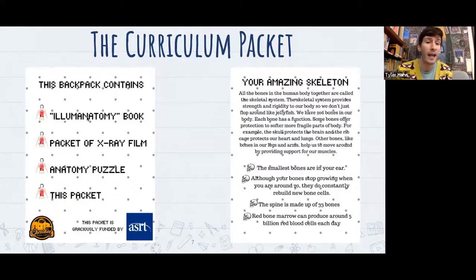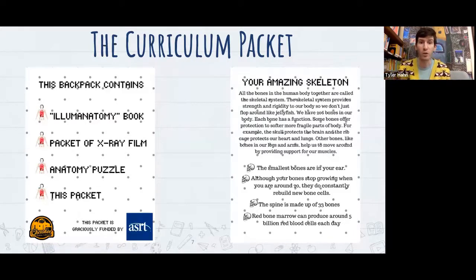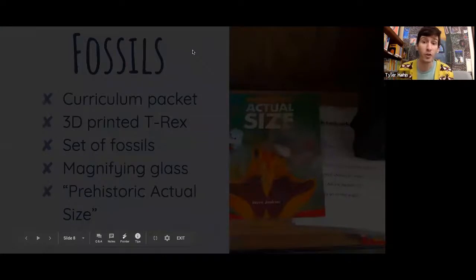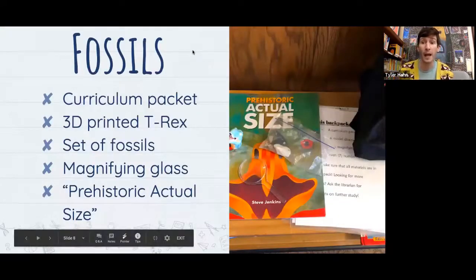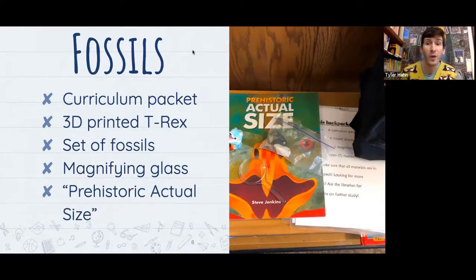On one side I list the contents: a book, a packet of x-ray film, an anatomy puzzle, and the curriculum packet. That makes it really easy for circulation staff — quickly glance through, make sure everything's there, scan it back in, and get it back on the hook in minimal time. It takes less time than checking puzzles for missing pieces.